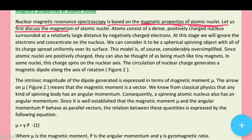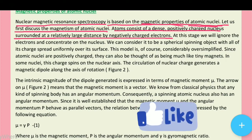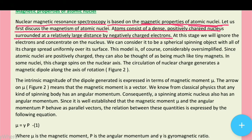Let us first discuss the magnetism of atomic nuclei. Atoms consist of a dense positively charged nucleus surrounded at a relatively large distance by negatively charged electrons. At this stage, we will ignore the electrons and concentrate on the nucleus. Humara concentration atom ke nucleus pe hona chahiye.